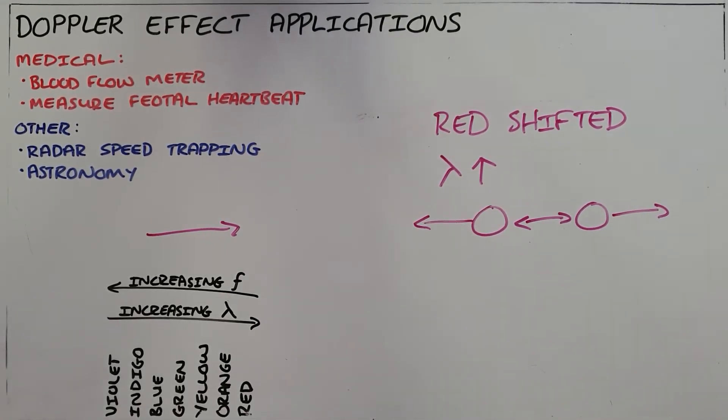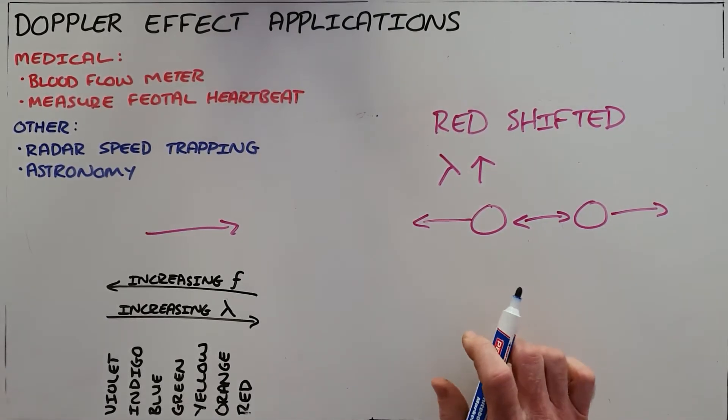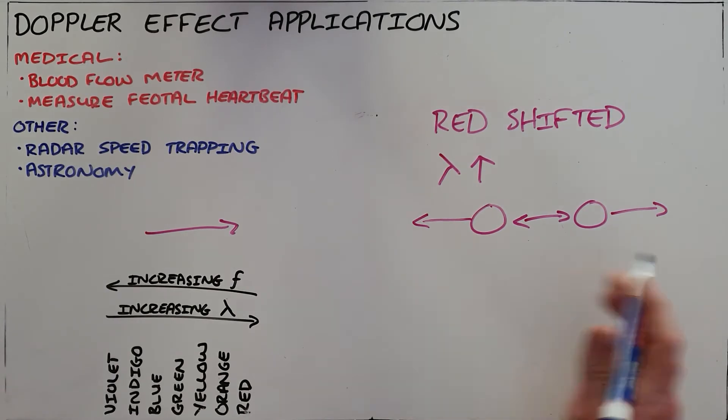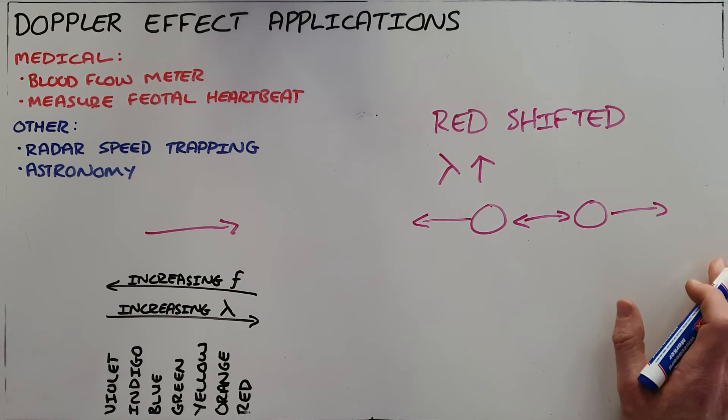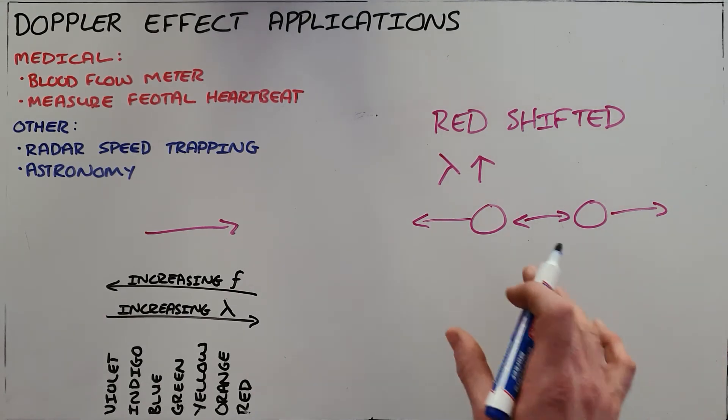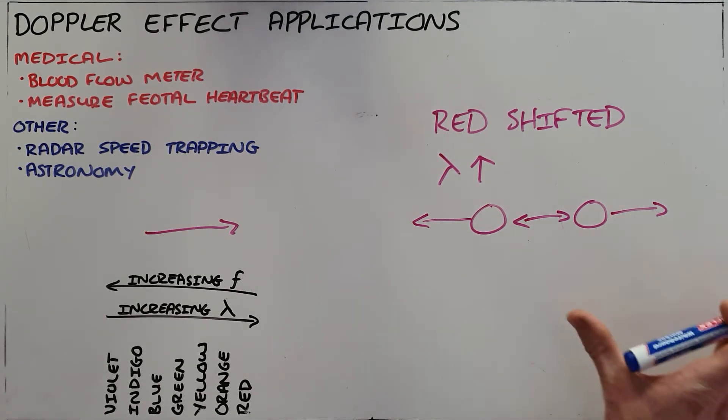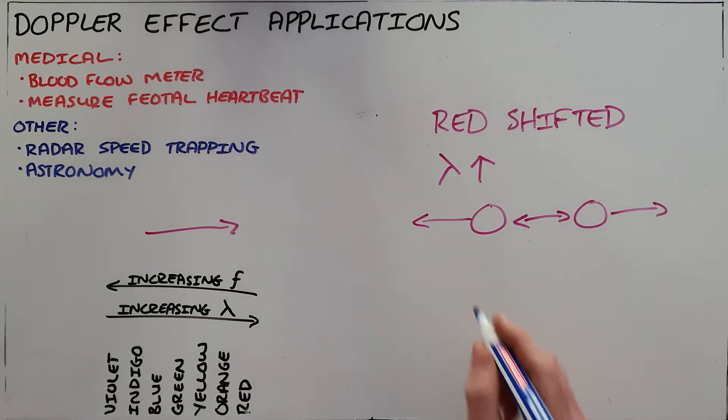Which is why the Doppler effect is used as part of a proof for an expanding universe, because all the light that we see from stars appears to be red shifted which implies that the wavelength has gotten longer, which implies that the distance between those two objects has increased in the time it took the light to reach us.